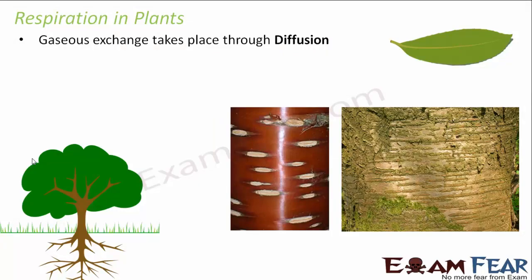In plants, gaseous exchange will take place through diffusion. Diffusion is a process where particles move from one medium to another, always moving from the medium of higher concentration towards the medium of lower concentration. So here also, gaseous exchange will take place through diffusion. For example, carbon dioxide will get transferred from the external environment inside the plants when the concentration of CO2 in the external environment is more than that inside the plants. Based on the difference in concentration, the exchange of gases will take place.